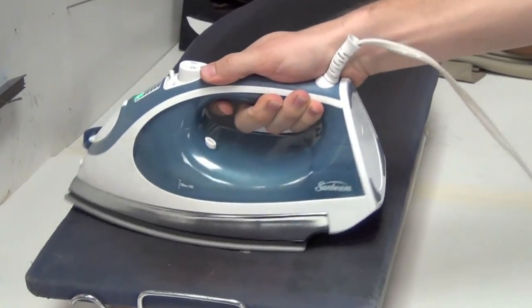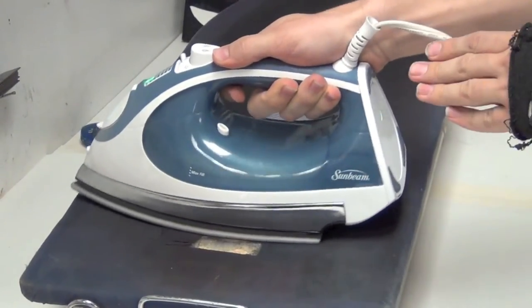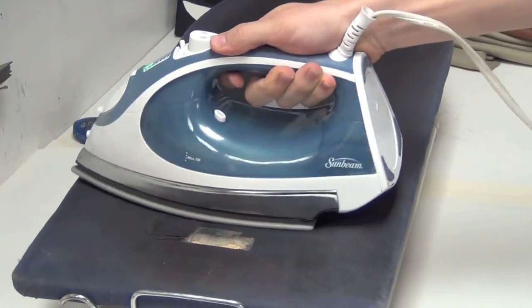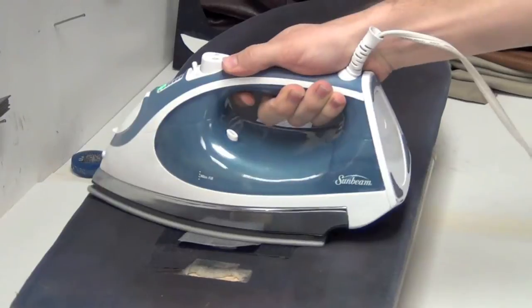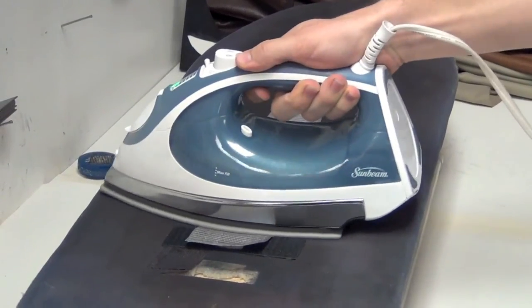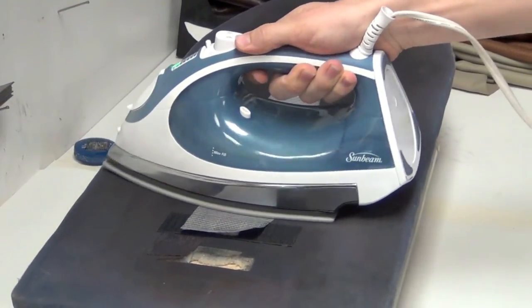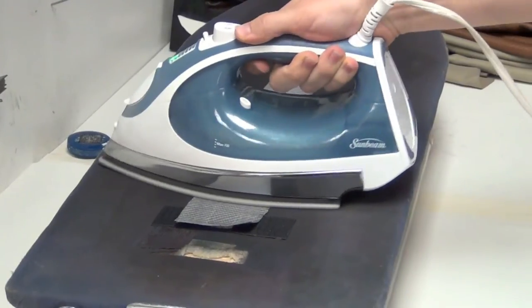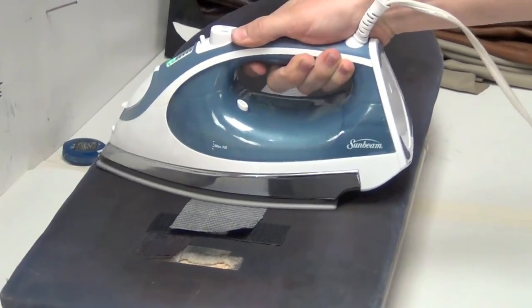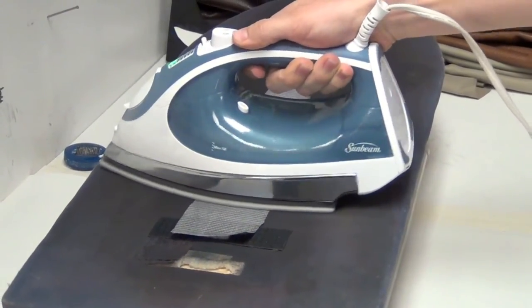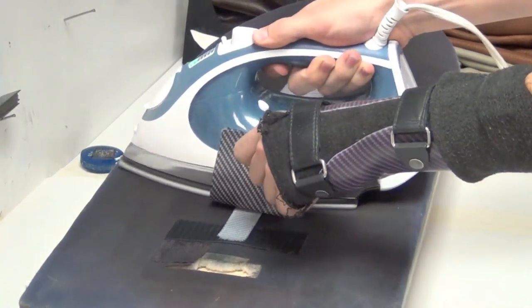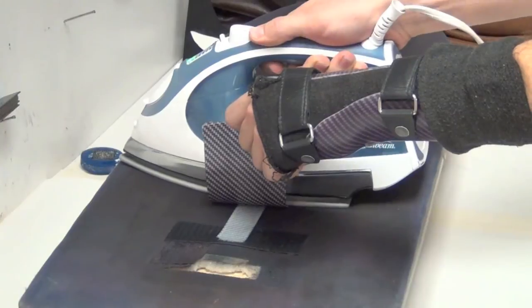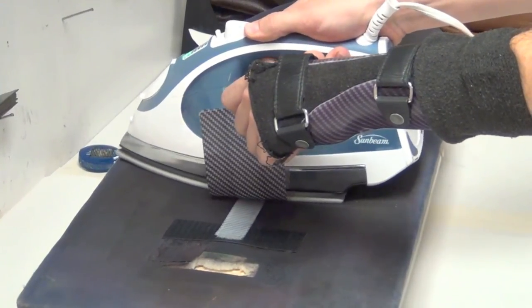Because if you stop moving, then you're going to melt your strap, you're going to melt the paper onto the velcro strap, and you're going to have a bad time. So again, just keep it moving. Just back and forth, up and down, in circles, whatever you want to do. It's going to take you a little while to get to the end, and I might actually be moving too fast. Yeah, I'm moving way too fast.